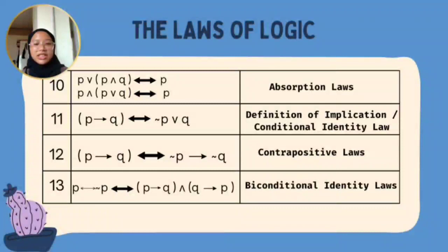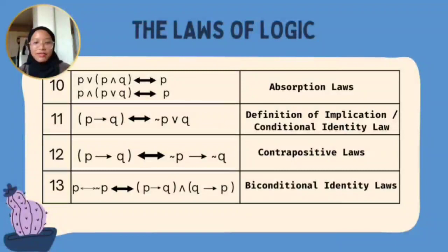Next we have the Definition of Implication, also called the Conditional Identity Law. We use it to change the implies symbol to OR or AND. So from P implies Q, it becomes not P or Q.